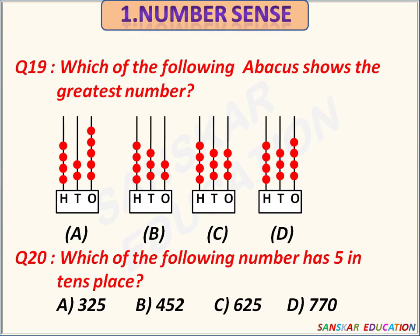Which of the following abacus shows the greatest number? The fourth abacus shows the greatest number. Option D is the correct answer.